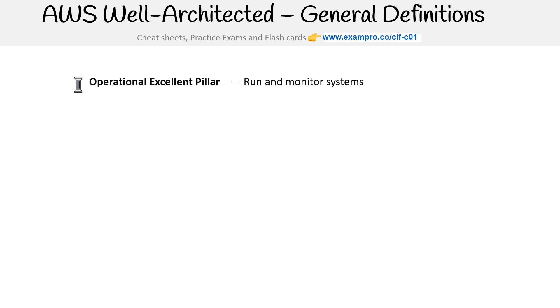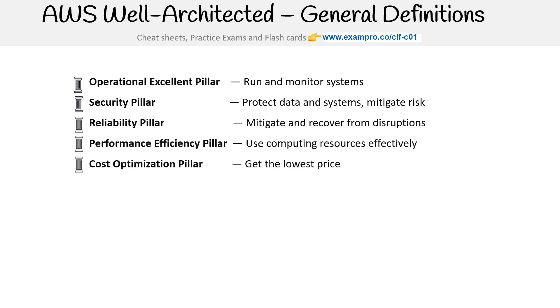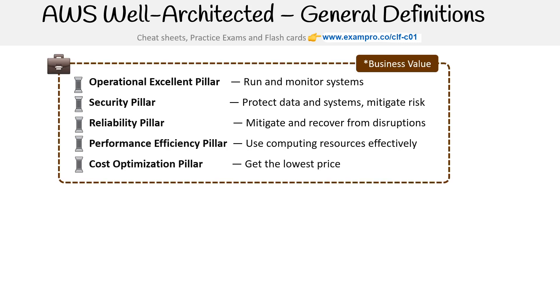Let's take a look at the general definitions for the Well-Architected Framework, starting with the pillars. The operational excellence pillar is there to run and monitor systems. The security pillar is to protect data and systems to mitigate risk. The reliability pillar is to mitigate and recover from disruptions. The performance efficiency pillar is about using computing resources efficiently or effectively. And the cost optimization pillar is about getting the lowest price, and this is where you're going to find all the business value.